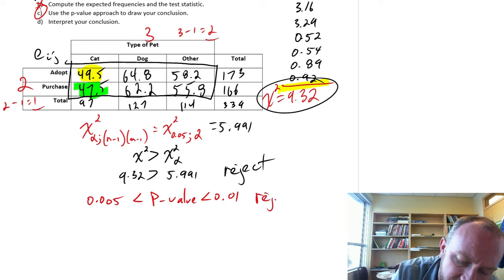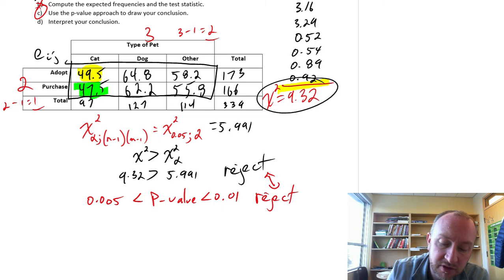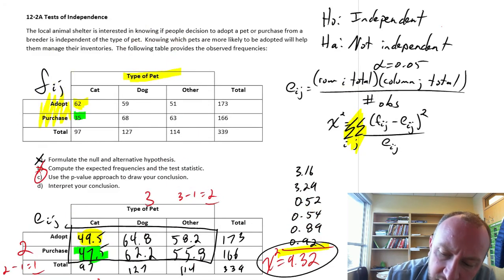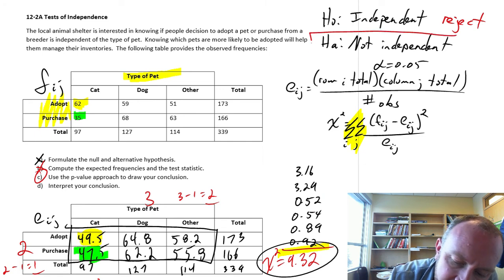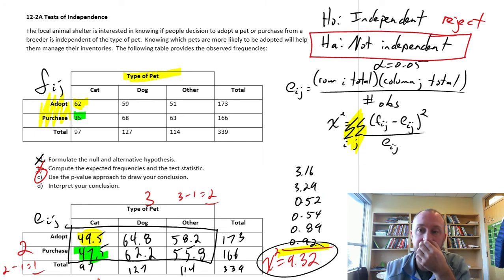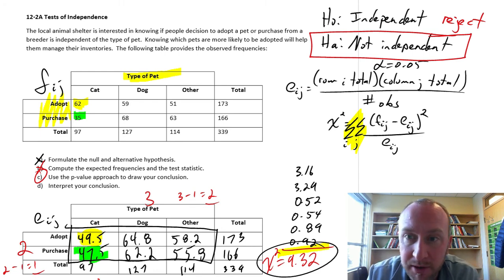So based on that, of course, we should always get the same conclusion with either approach. So we can reject our null hypothesis. We can reject. We do have evidence to show that they are not independent. So there is a dependency between the type of pet and the method of acquisition, whether I adopt it or I purchase. So we do have evidence to show that these two variables are dependent on each other. They are not independent variables.